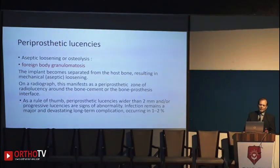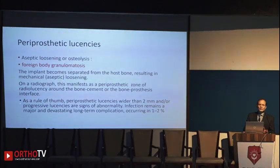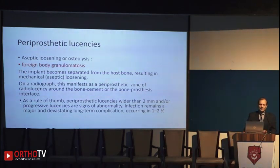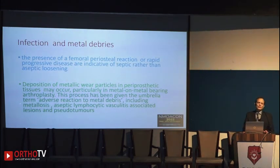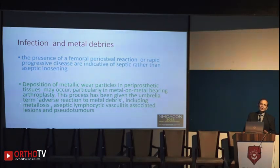These are all called periprosthetic lucency or osteolysis. Basically, it is caused by foreign body granulomatosis due to micro-disintegration of plastic material, or in metallosis due to metal deposits, leading to lucency around the implant. Infection is the most important cause of this lucency or osteolysis and can be seen on X-ray; sometimes a CT scan or MRI may provide more information.